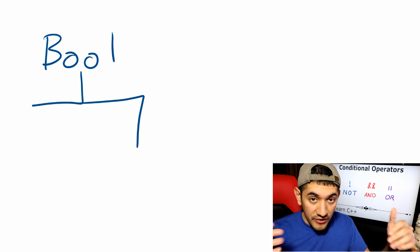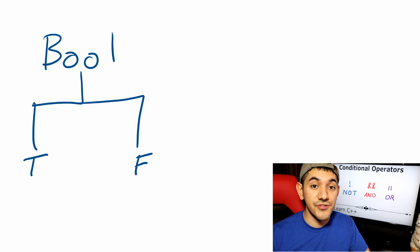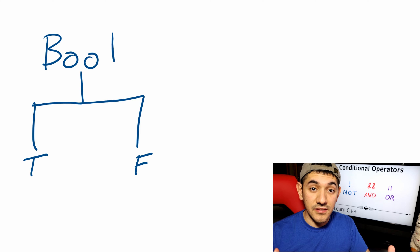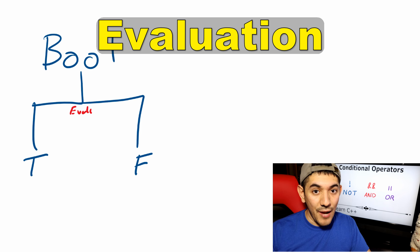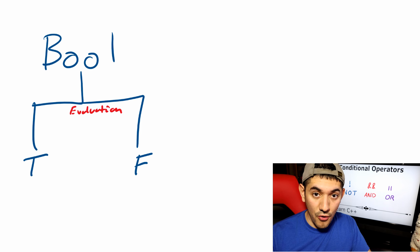We'll talk about the different operators that are used to modify conditions, as well as combine the result of various conditions to yield one result. A condition is just a Boolean variable, and at one point during our execution of our code, we find the result of that condition — we know whether that condition comes out to be true or false. We say that the condition is evaluated when we know the result.